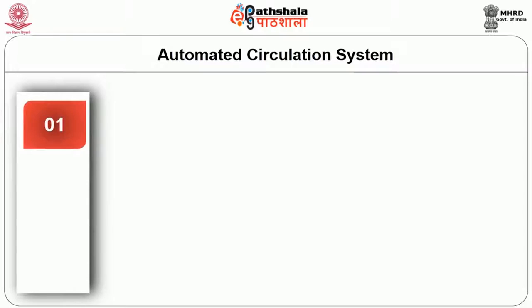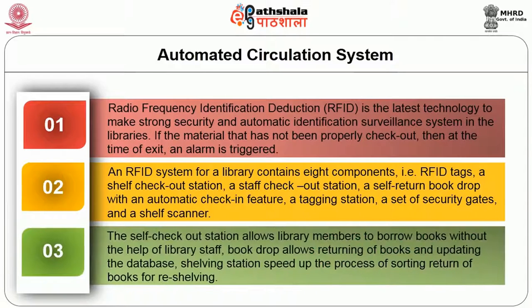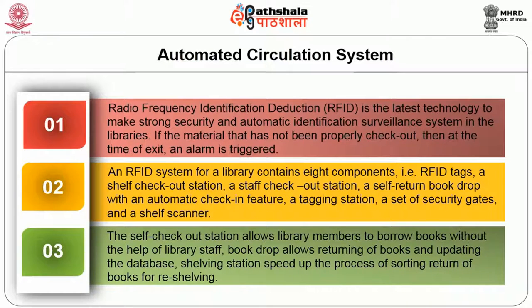RFID is the latest technology to provide strong security and automatic identification surveillance in libraries. If material has not been properly checked out, an alarm is triggered at the time of exit. An RFID system for a library contains eight components: RFID tags, a shelf checkout station, a staff checkout station, a self-return book drop with automatic check-in feature, a tagging station, a set of security gates, and a shelf scanner. The shelf checkout station allows library members to borrow books without the help of library staff, the book drop allows returning of books and updating the database, and shelving stations speed up the process of sorting returned books for pre-shelving.